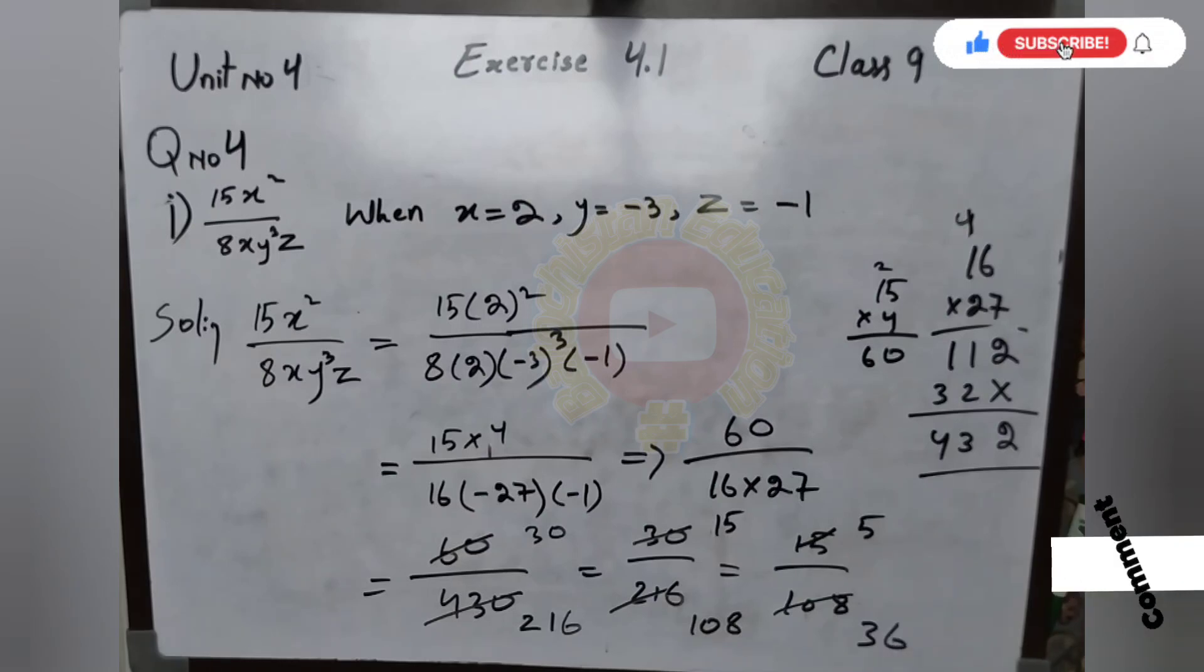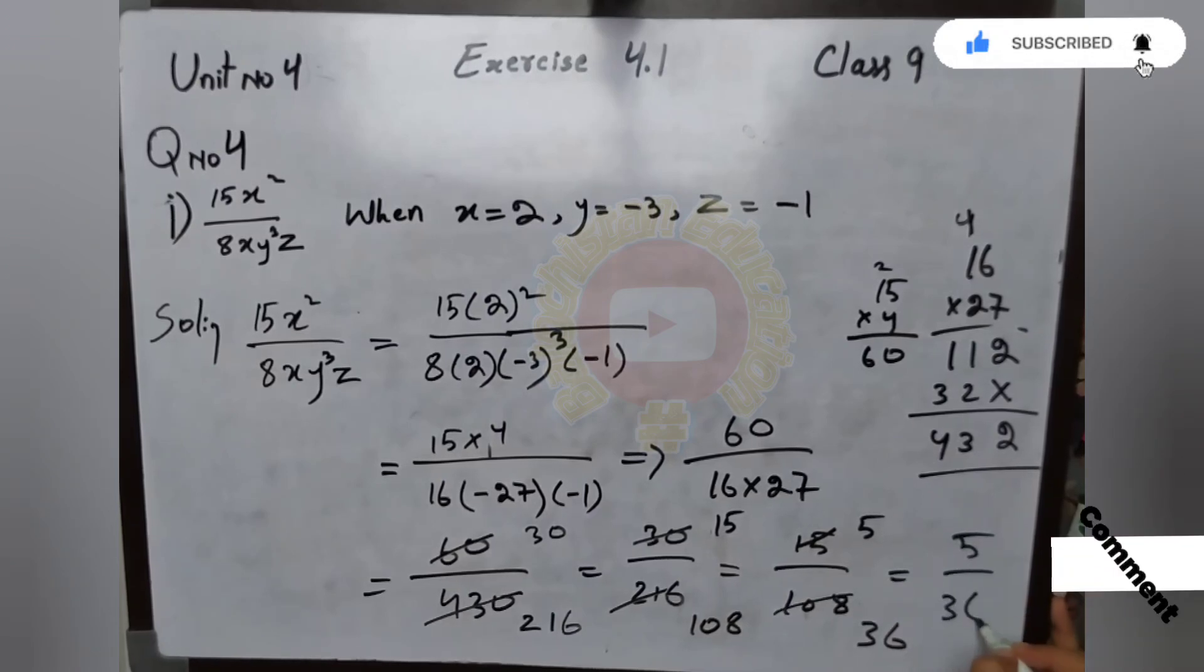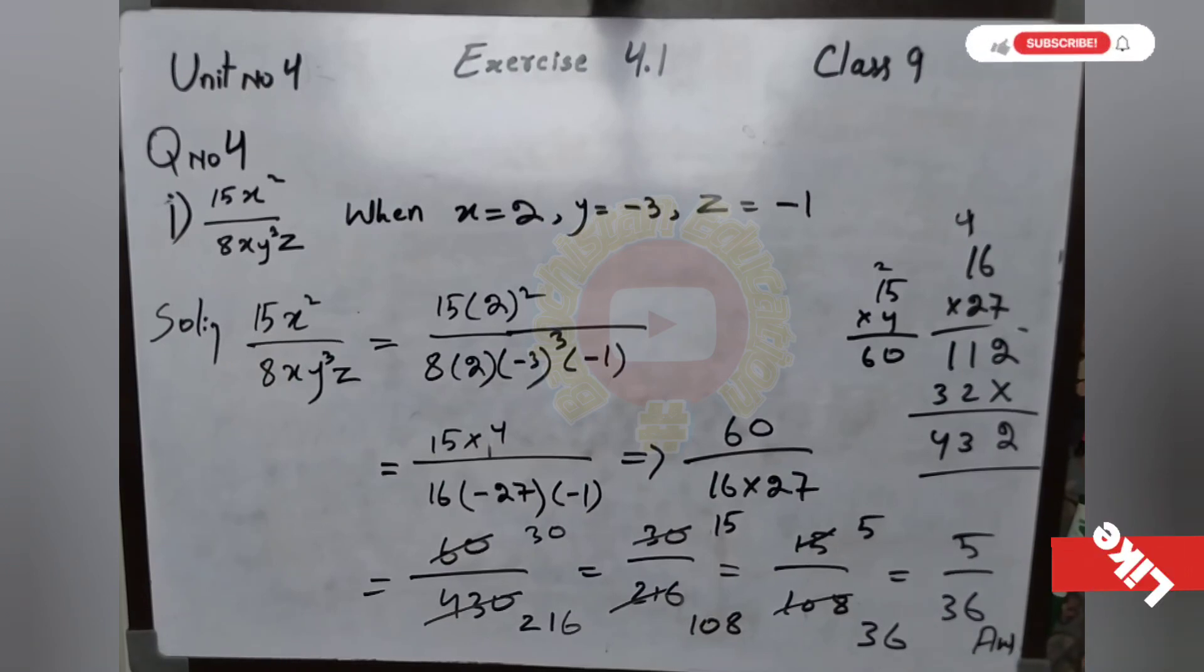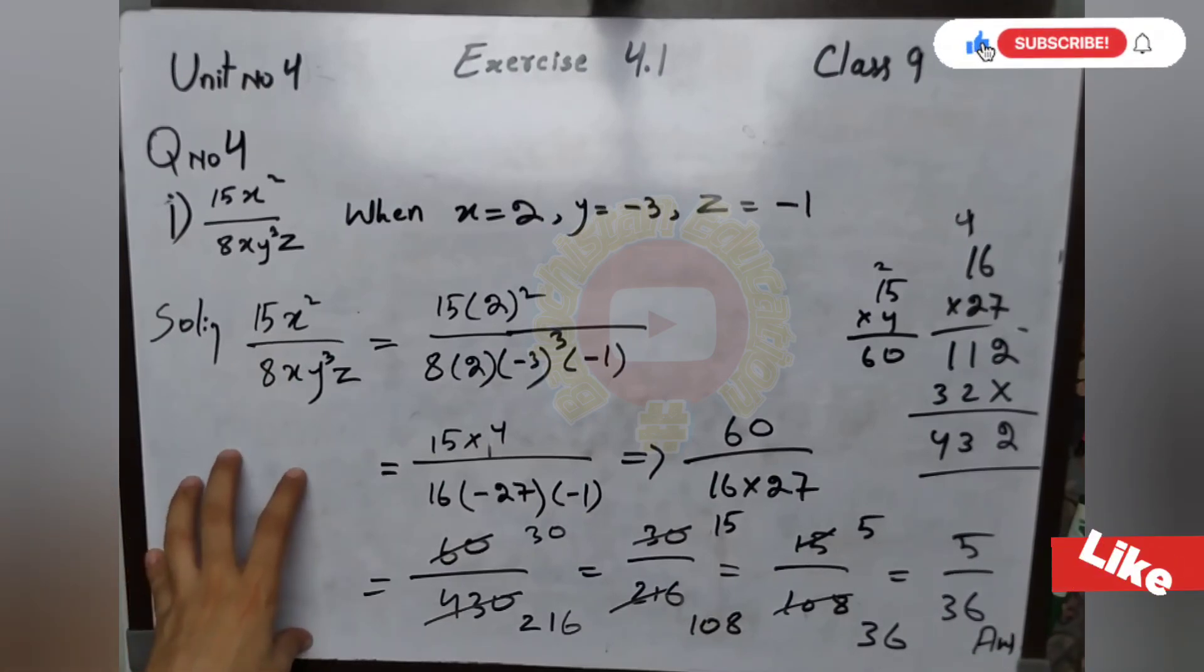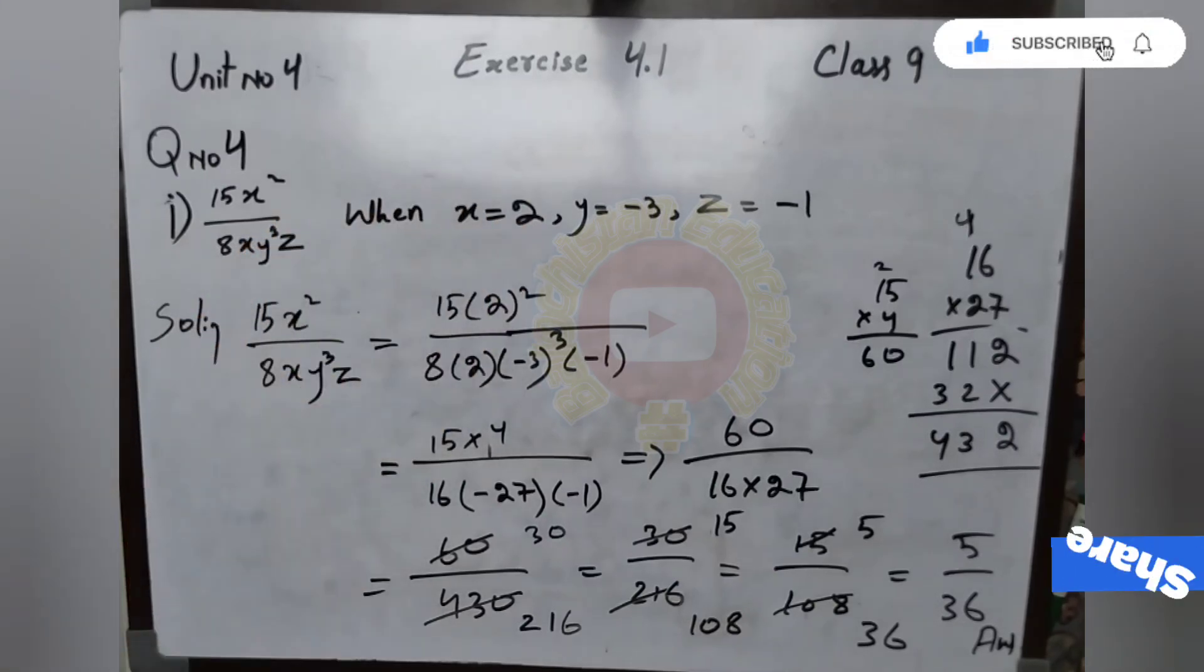Now when we have 6, then we can cut by 2 again. 2 times 15 is 30, 2 times 1 is 2. We can solve it where we can solve it. I have cut it, then cut it. Now here we can cut it where we can solve it.